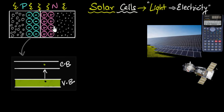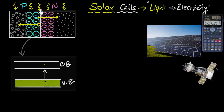Imagine an electron-hole pair is formed inside the depletion region — an electron and a hole formed due to light photons. Before they have a chance to recombine, this electron gets attracted by the positive charge and gets accelerated in that direction. The hole similarly is attracted by the negative charge, or repelled by the positive charge, and gets accelerated the other way. So before they can recombine, they are swept across due to the electric field in the depletion region. As a result, the holes get swept and accumulated in the p-type.